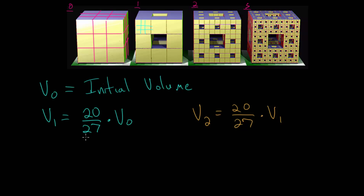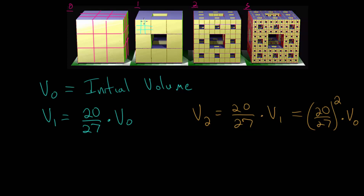Since the volume at stage 1 equals 20/27 times the volume at stage 0, we can rewrite the volume at stage 2 as (20/27)² times the initial volume. From stage 1 we had 20 out of 27 smaller cubes, and then each of those was further divided into 27 even smaller cubes with 7 removed. So each has 20/27 of its volume, and since we did that for all of them, the total volume going into stage 2 is 20/27 times the volume at stage 1.